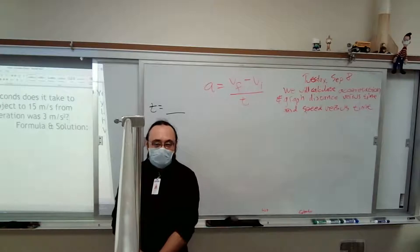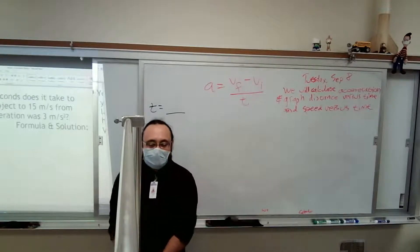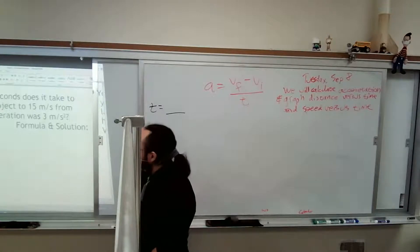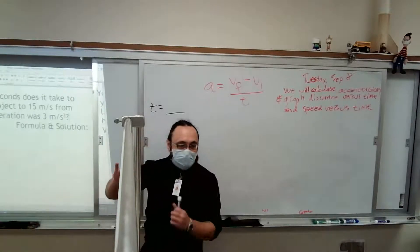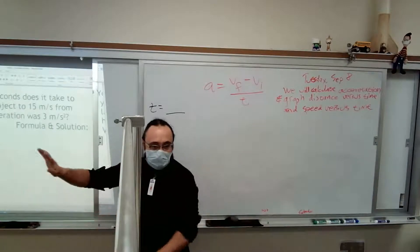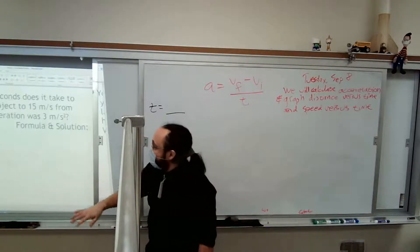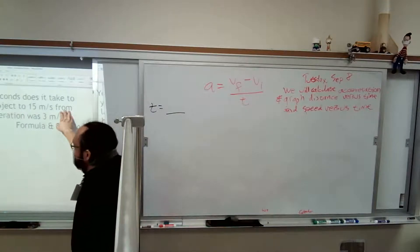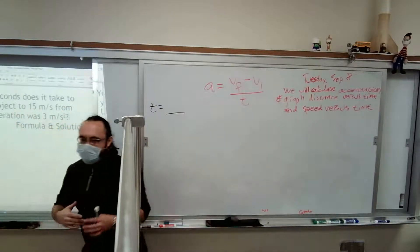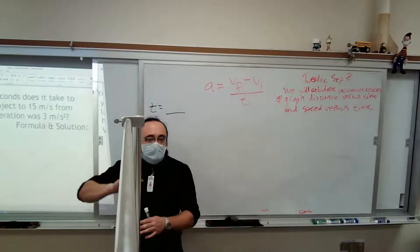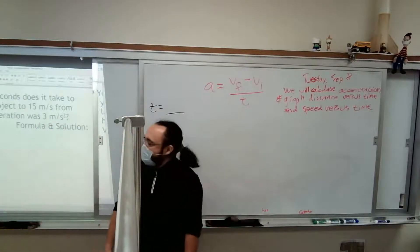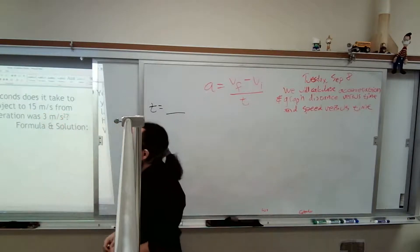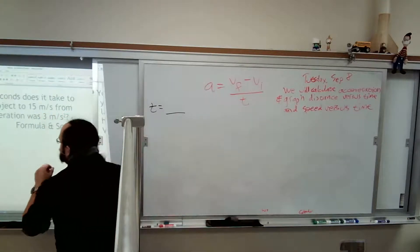Rest happened first, thank you. Whenever it says from, that's like the origin of the thing, so that's the very beginning. From means it's initial velocity, and to is what happened after from. It went from this and then to something else. So to is final velocity, from is initial velocity. Those are key words to use to help you identify which is which.